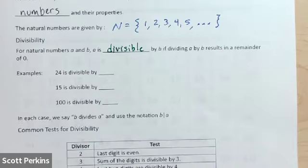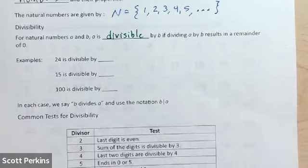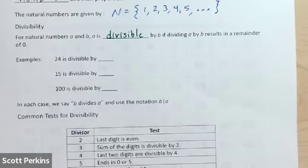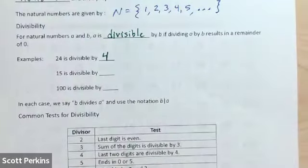For instance, just to put some numbers to this new word, 24 is divisible by, well, you tell me, what's a number? There's several answers here. What's a number that divides evenly into 24? Four, sure. You could have said six. You could have said 12. You could have said 24. So 24 is divisible by four.